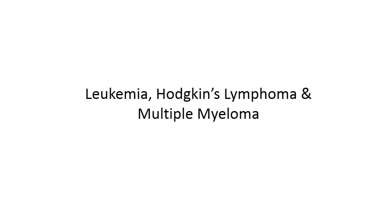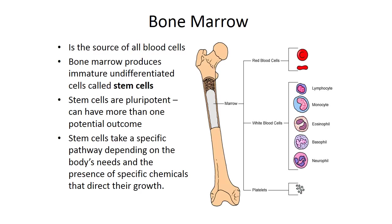When we think about cancer, it is a disease process that involves abnormal cell growth and differentiation. It works within the bone marrow, which is the source of all blood cells — our red blood cells, white blood cells, and platelets. Bone marrow also produces immature, undifferentiated cells called stem cells. These stem cells are pluripotent, meaning they can have more than one potential outcome, depending on what the body needs and the presence of specific chemicals that control their growth.